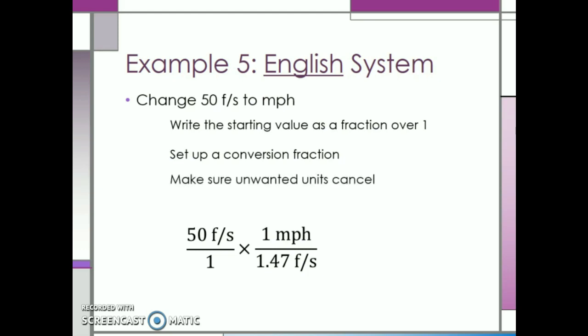Next, we can cancel unwanted units of feet per second over feet per second. Last, we can multiply everything across on top, everything across on the bottom, and then we can divide 50 divided by 1.47. This gives us a final answer of approximately 34 miles per hour is equal to 50 feet per second.